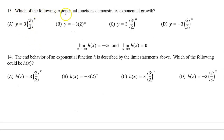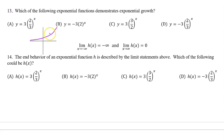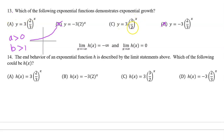Number 13. Which of the following exponential functions demonstrates exponential growth? Exponential growth looks like this: the curve must be above the x-axis, so the a value must be positive. That means the answer cannot be B or D. In addition, exponential growth means that the b value must be greater than one. Two-thirds is less than one, so the answer is not A. Three over two is 1.5, so the answer is C.